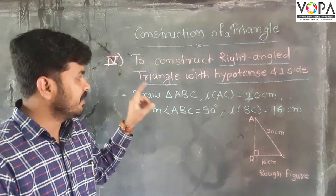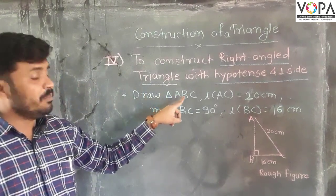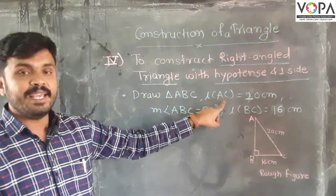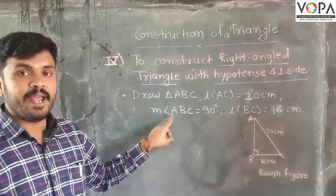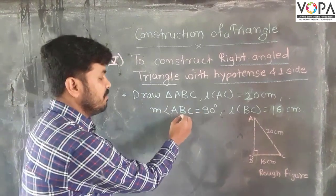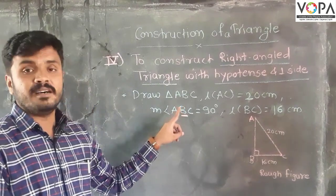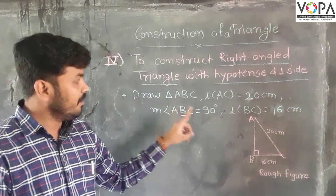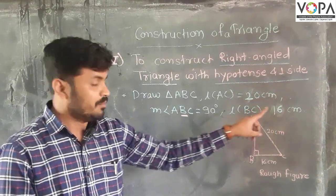Here is the question: draw a triangle ABC. In that triangle, length of AC is equal to 20 centimeters, measurement of angle ABC is equal to 90 degrees. That means B is the angle, the middle vertex is the angle of the given triangle. And the length of BC is equal to 16 centimeters.